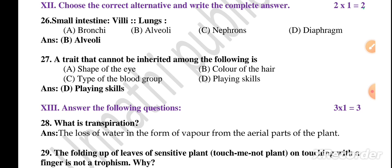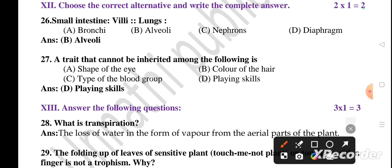Question main number 12 — choose the correct alternatives and write the complete answer. These are multiple choice questions, total two MCQs, each carrying one mark. Question 26: the functional part of the small intestine is villi. Similarly, the functional part of lungs is alveoli, because alveoli are the organs that help in exchange of carbon dioxide and oxygen.